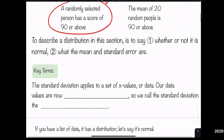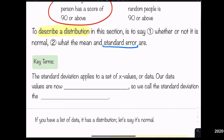To describe a distribution in this section, we say: one, whether or not it is normal, and two, what the mean and standard error are. We have a new term here — standard error. Standard deviation applies to a set of raw x values, like regular data you've worked with before.